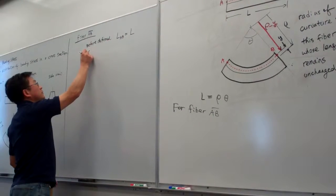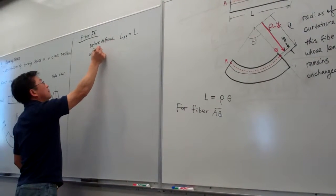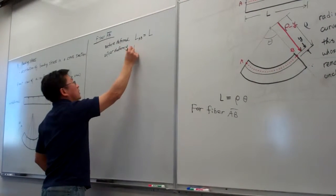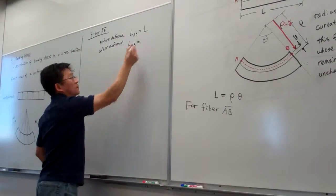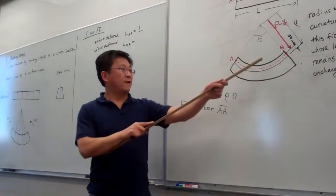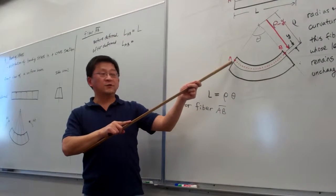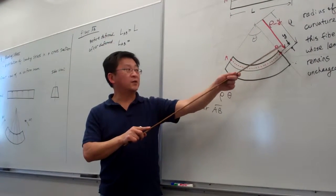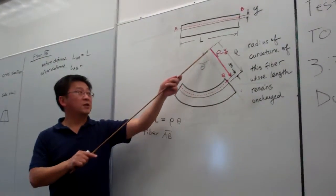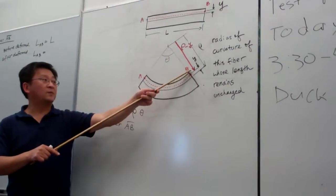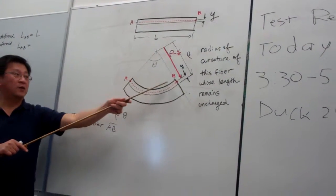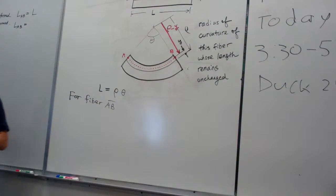After deformation, the length of AB — by reading this graph — is now a portion of a circular segment which has a radius (ρ minus y). We multiply the radius (ρ minus y) by the angle θ, and that gives us the length of AB after deformation.